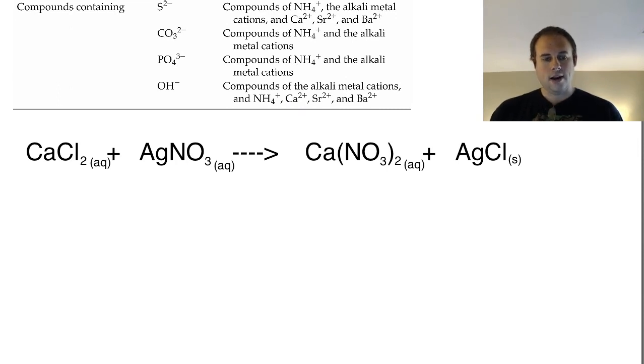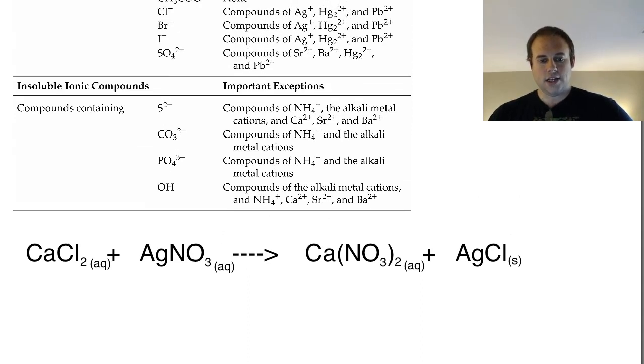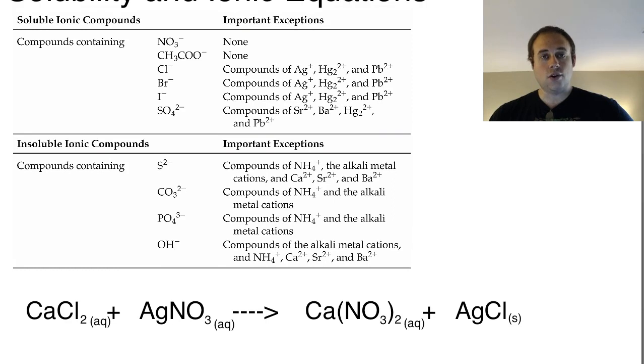Calcium chloride which is aqueous goes to silver nitrate which is also aqueous. You combine them and you get calcium nitrate and silver chloride. Notice that silver chloride is solid. In future videos you're going to practice giving the products and predicting their solubility. That's an important task you need to be able to do, but I want to walk you through this. How do we know that each of these are aqueous or solid?